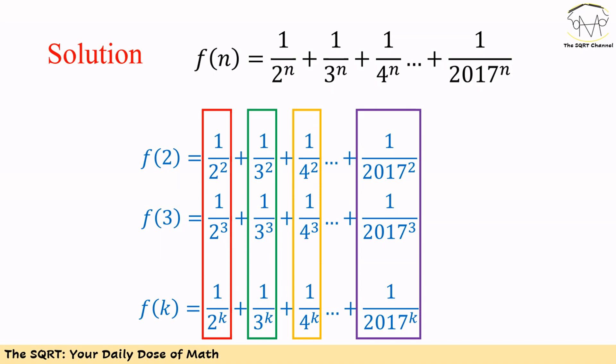If you follow the same approach for f of 3, f of 4 and in general f of k and then add them together, you can see that they have something in common. Basically you can factor out the first terms together, the second terms together, and the last terms together.